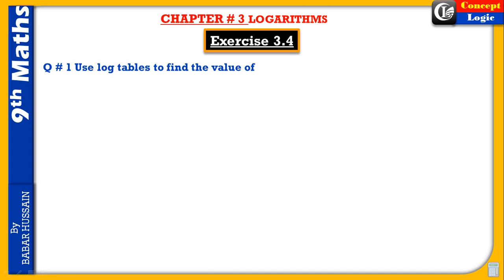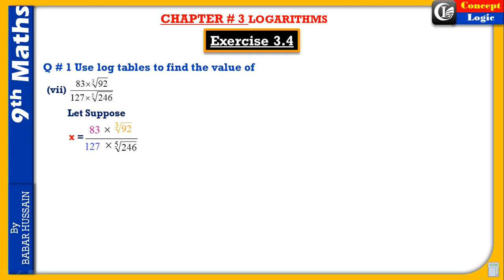Exercise 3.4, first question: use log tables to find the value of the 7th part. Let's suppose x is equal to the given values: 83 into 92 (with indices) in the expression.